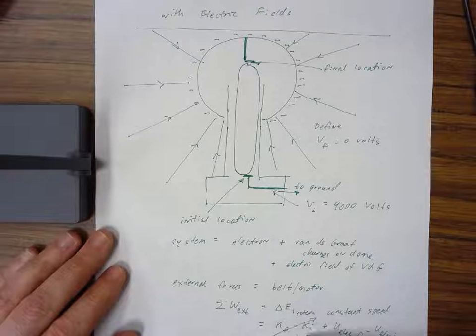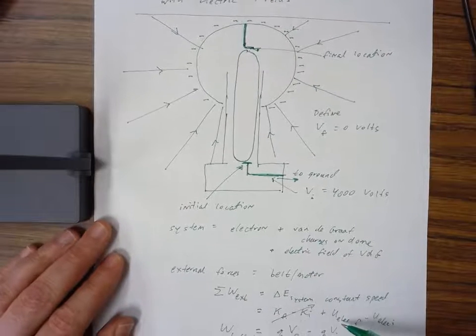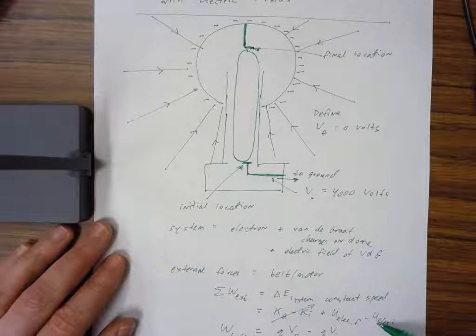This system has two kinds of energy: kinetic energy K and electric potential energy U-electric. So I put the change in K and the change in U.